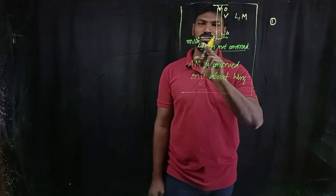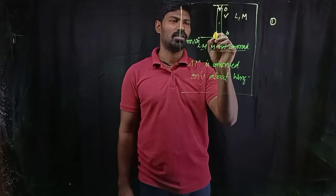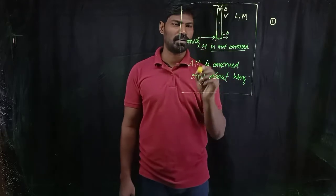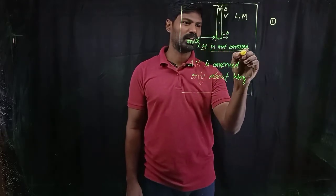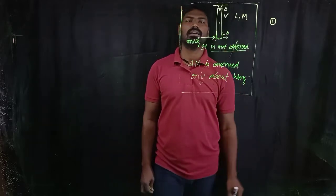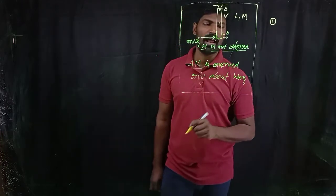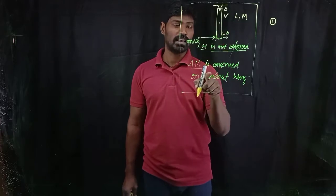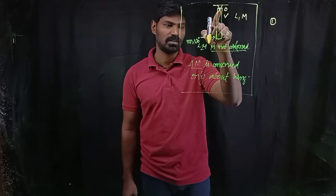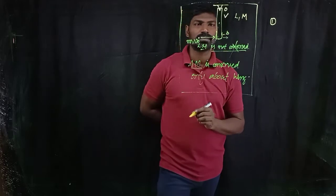I'm assuming the ball sticks to the rod after collision. A very important point: linear momentum is NOT conserved here because the hinge force is an impulsive force. So forget about applying conservation of linear momentum. I will apply conservation of angular momentum, and since the body is hinged, angular momentum is conserved only about O, the fixed hinge point.